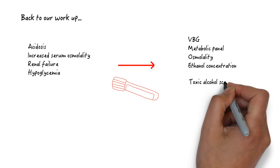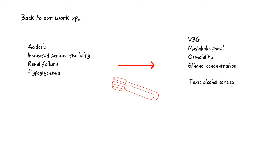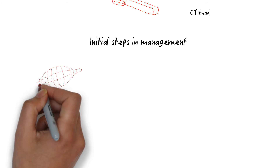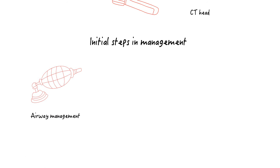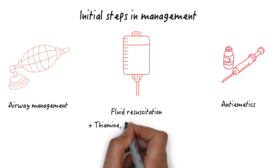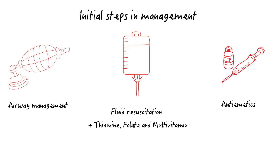Many hospital laboratories can perform a toxic alcohol screen, which may include ethylene glycol, methanol, and sometimes isopropyl alcohol concentrations — this should be obtained if available. Head CT may be considered in the patient with undifferentiated altered mental status. Initial management steps include assessment and management of the airway, fluid resuscitation in the hypotensive or dehydrated patient, antiemetics as needed, and supplemental thiamine, folate, and multivitamin, as often considered in patients with a history of alcohol abuse and likely poor nutritional status.